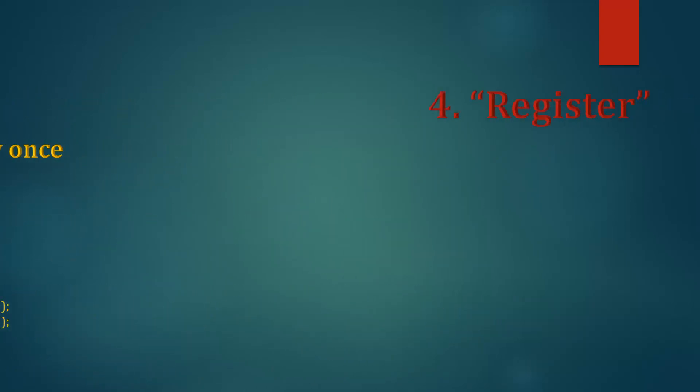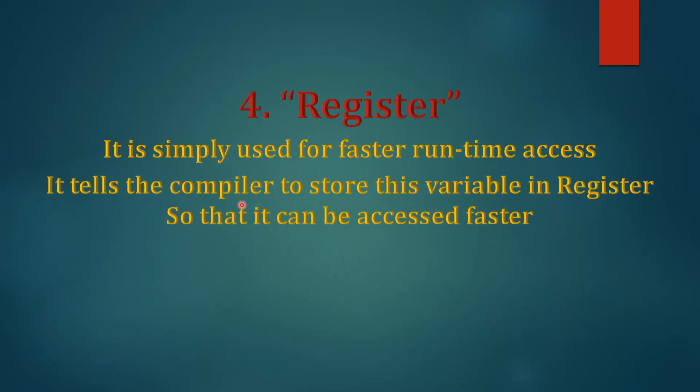The last one is register, which is the fourth type. It is simply used for faster runtime access. It tells the compiler to store this variable in register so that it can be accessed faster. So register variable is used for those variables which need to be accessed multiple times frequently and we need speed for that. So these were the storage classes in C.